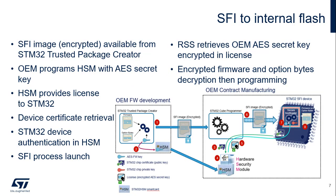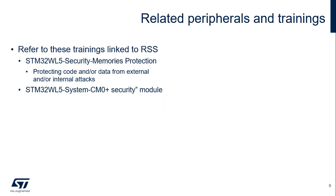Secure firmware install to internal flash memory goes as follows. Numerical steps are represented on the schematic. 1. OEM creates OEMFW or .SFI file. 2. OEM provisions OEMFW key in HSM. 3. Cube programmer gets certificate. 4. HSM creates the license. 5. STM32 gets the license. 6. STM32 gets the OEMFW or .SFI. 7. STM32 decrypts the OEMFW and option bytes. 8. STM32 programs the OEMFW and option bytes. Please refer to memory protection, flash, or boot training for more on those topics. Also find a list of peripherals related to the RSS and the SFI.